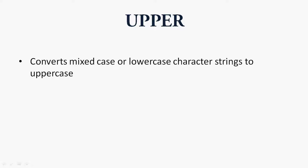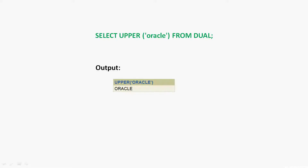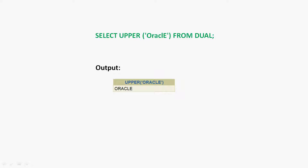We will see an example using this function. The query is: SELECT UPPER('oracle') FROM dual. In this query the character string 'oracle' is given in lowercase. Here we can see the output — the character string 'oracle' is now in uppercase. We will see one more example: SELECT UPPER('Oracle') FROM dual, where the string is given in mixed case. The UPPER function converts lowercase or mixed case strings to uppercase.